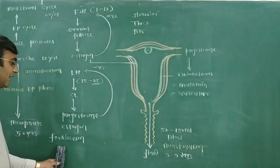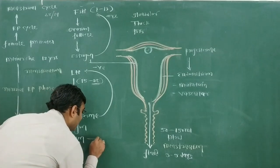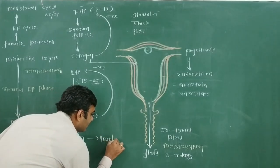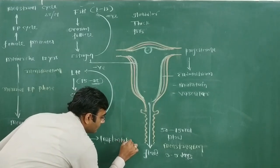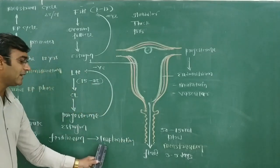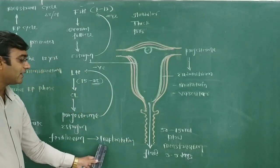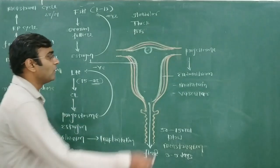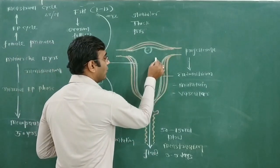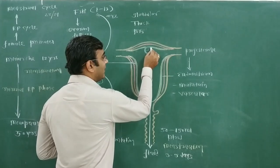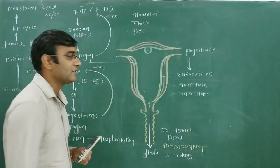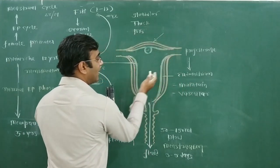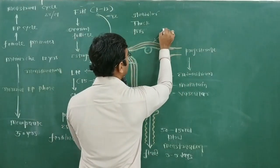If fertilization occurs, after fertilization the procedure that takes place is implantation. During implantation, the luteal phase is running. Implantation is when the embryo embeds in the wall of the endometrium. Most often, implantation takes place in the upper part of the uterus — that is called the fundus.